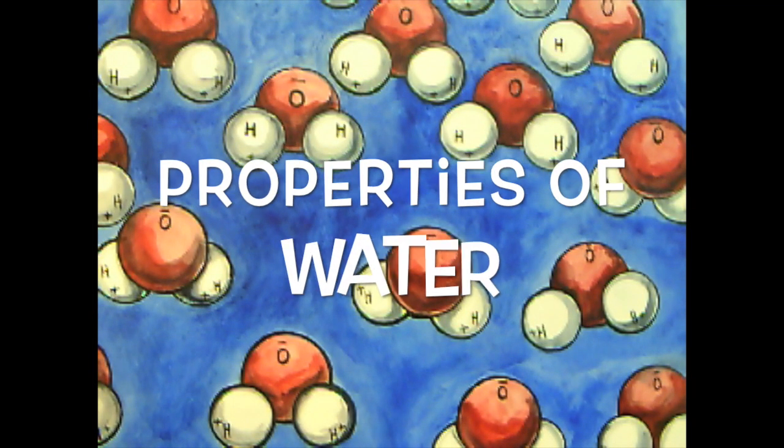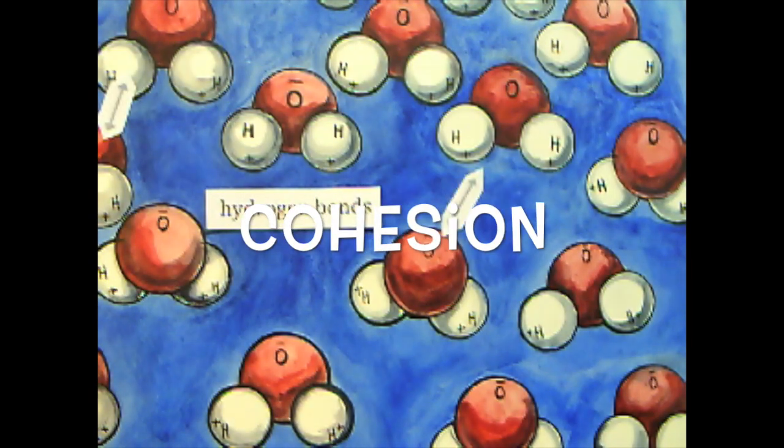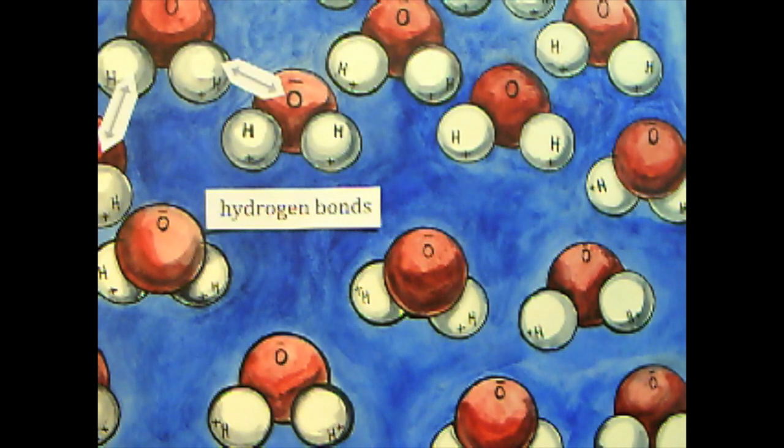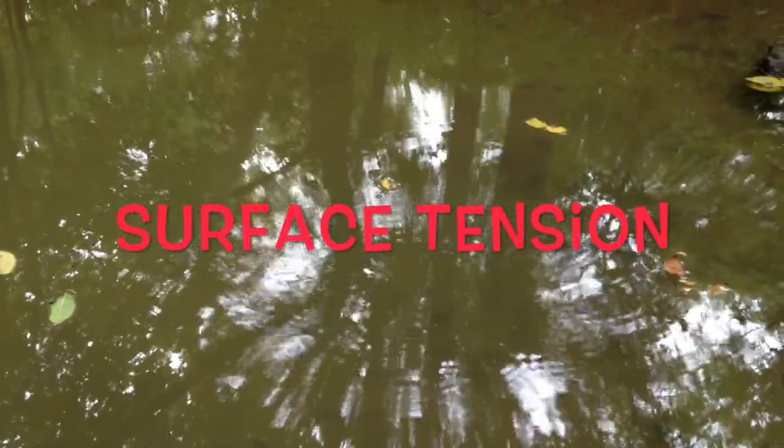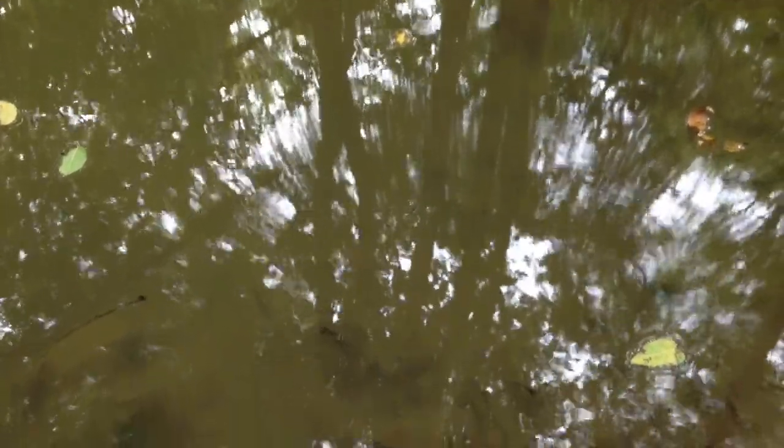Property one: Water molecules have cohesion. There are strong hydrogen bonds between molecules of water. This gives water a high surface tension. Notice these insects scurrying along the surface of the water, or the leaves floating.